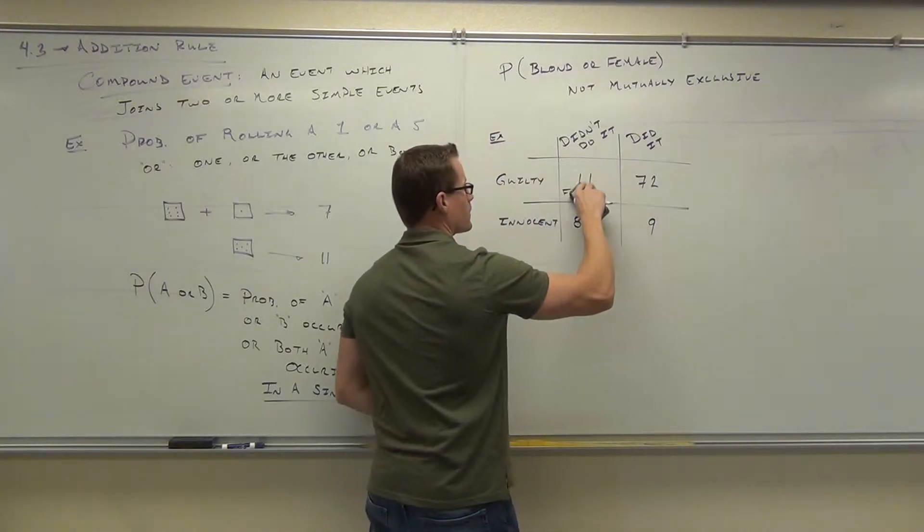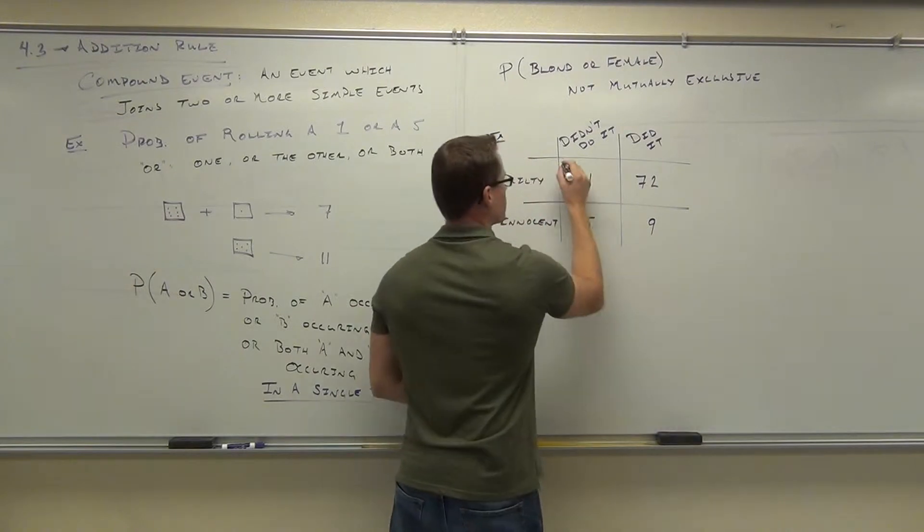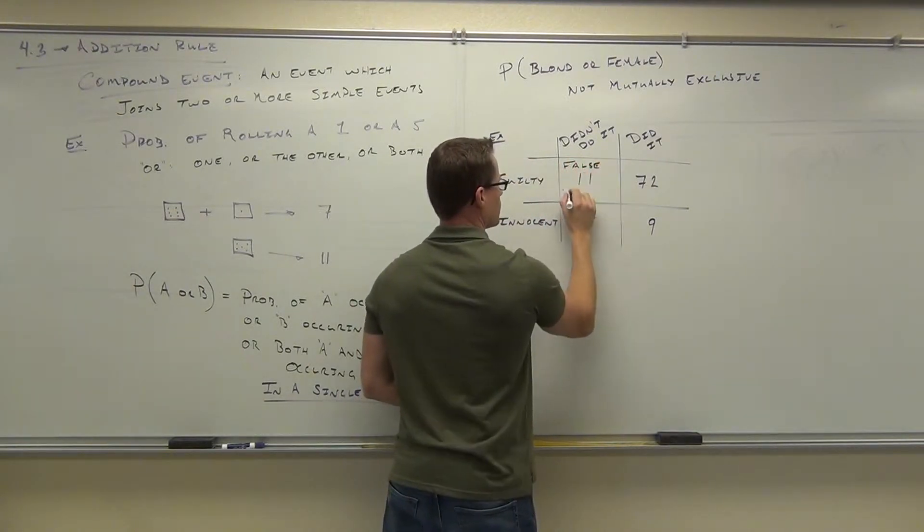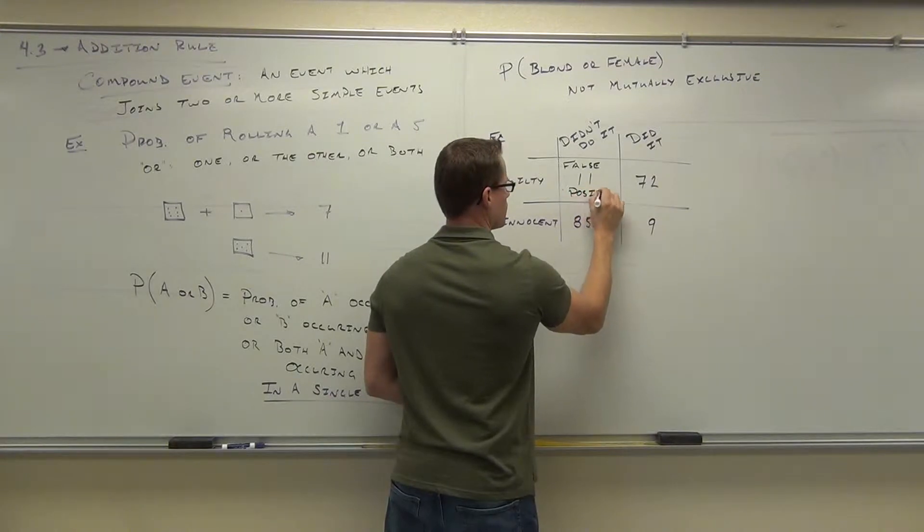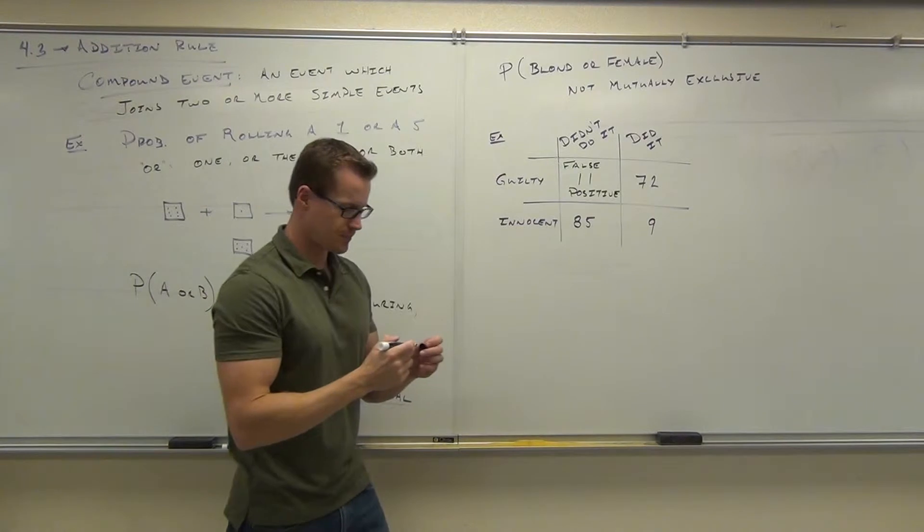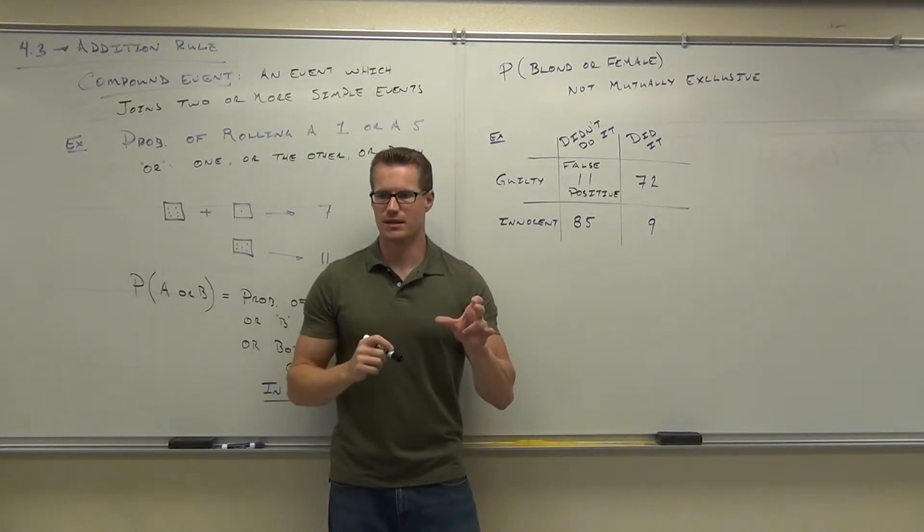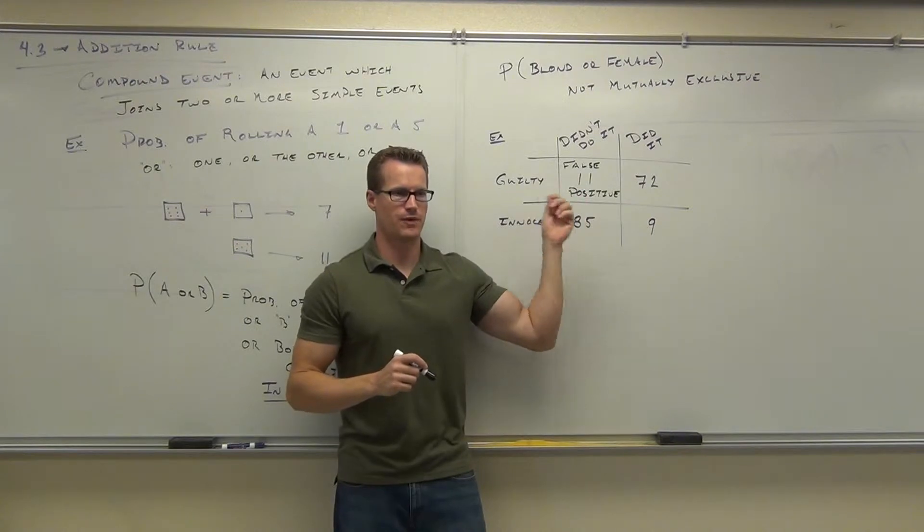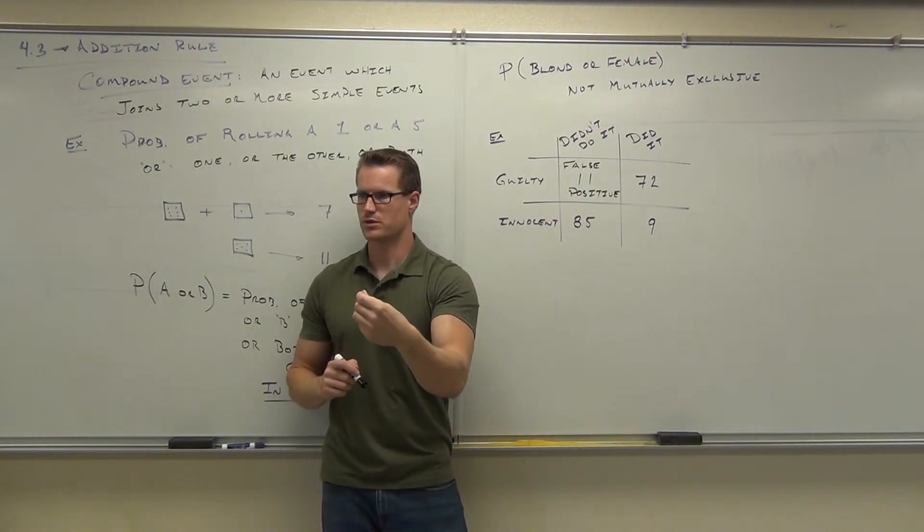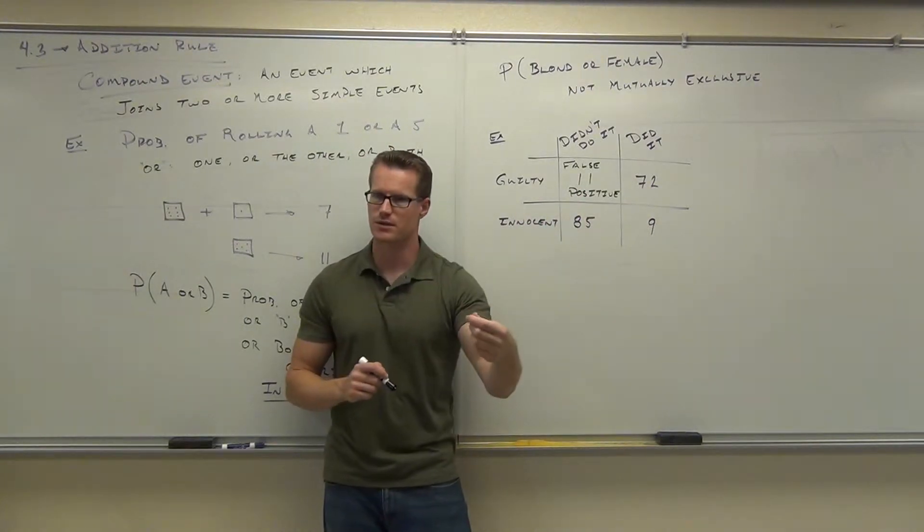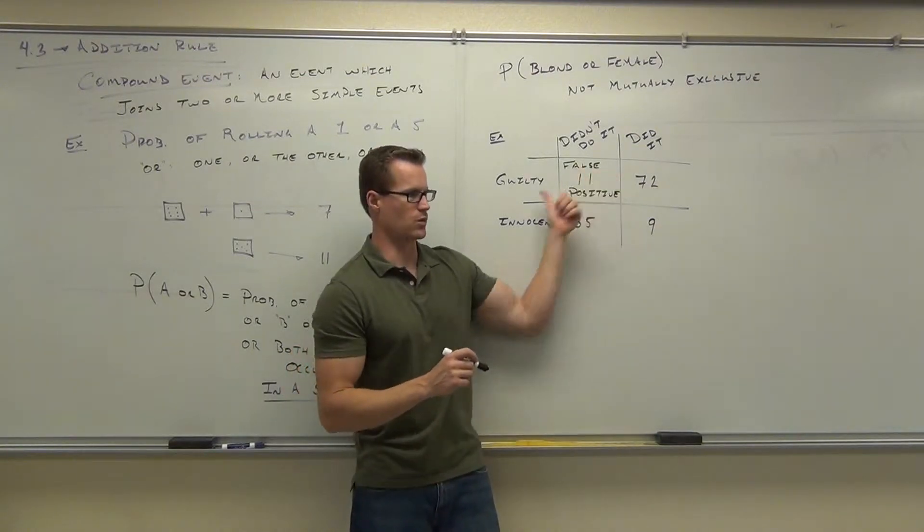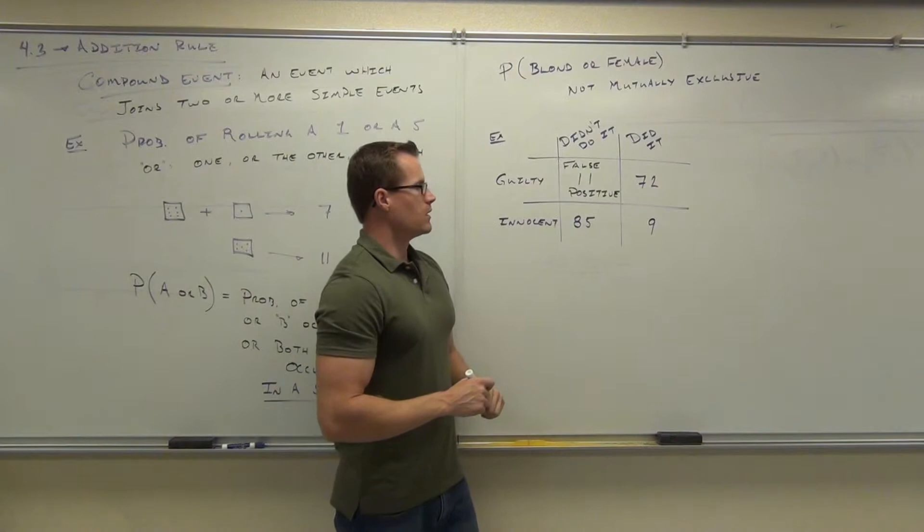This is called a false positive. They were actually found guilty. That's a false positive. They were mistakenly, false, mistakenly found guilty, found the thing that people are looking for in court. Do you understand why that's a false positive? They were actually found to be what they were looking for, guilty.